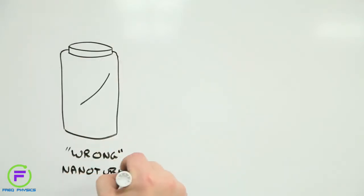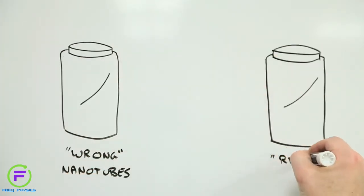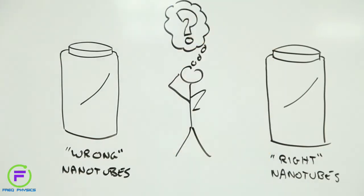The trouble is, this isn't much help without knowing what a wrong carbon nanotube looks like and what the wrong places are.